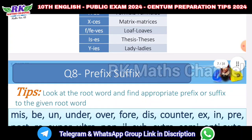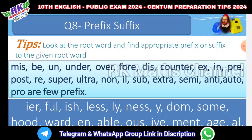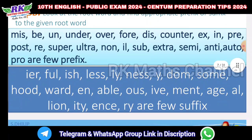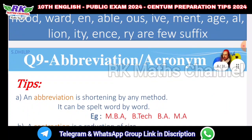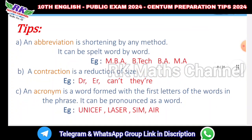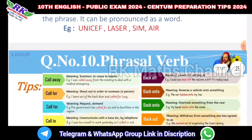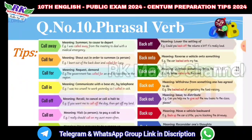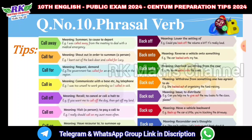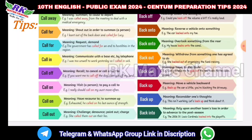Question covers prefix and suffix - for example, 'under' as a prefix. Question number 9 is abbreviations and acronyms - all of these you can read and learn. Question number 10 is phrasal verbs, such as: call away, call for, back into, back onto, back off - learn meanings based on examples from the uploaded material.